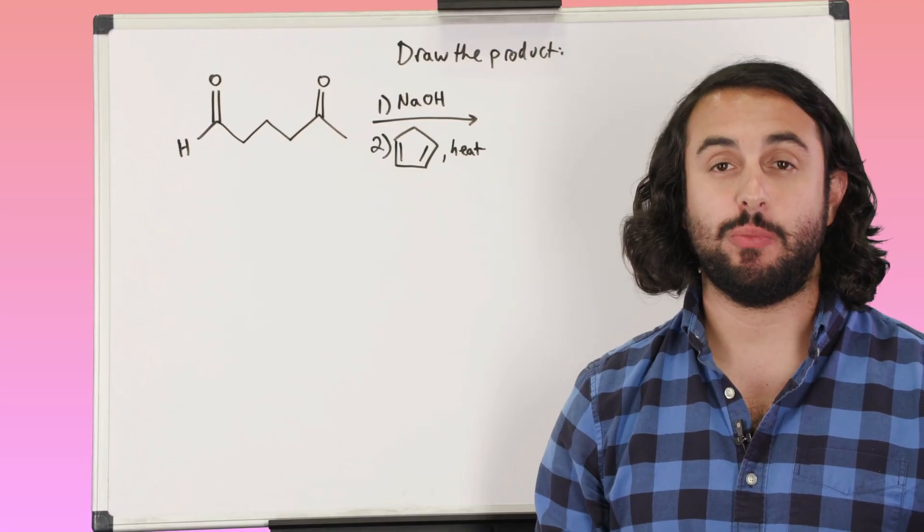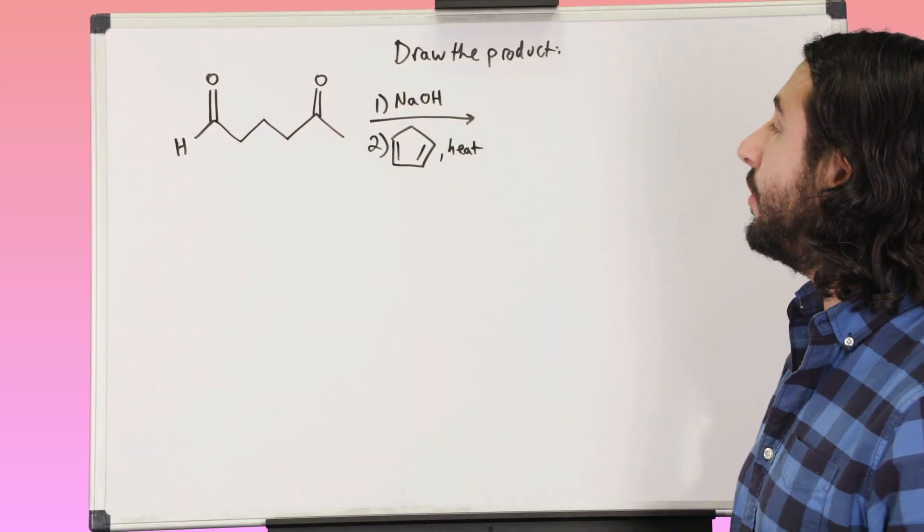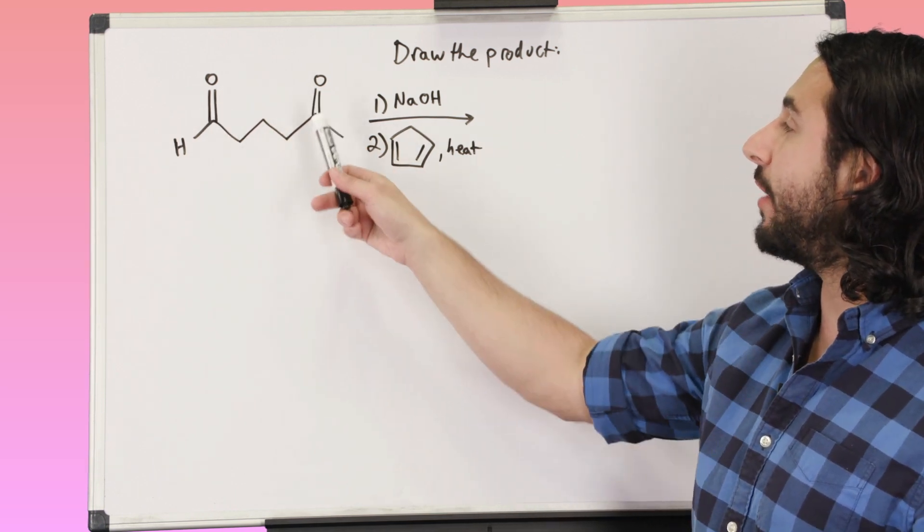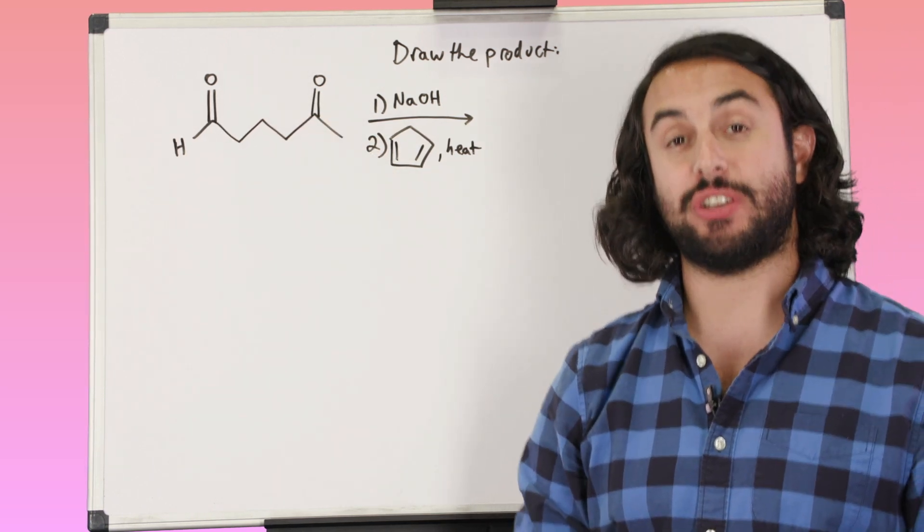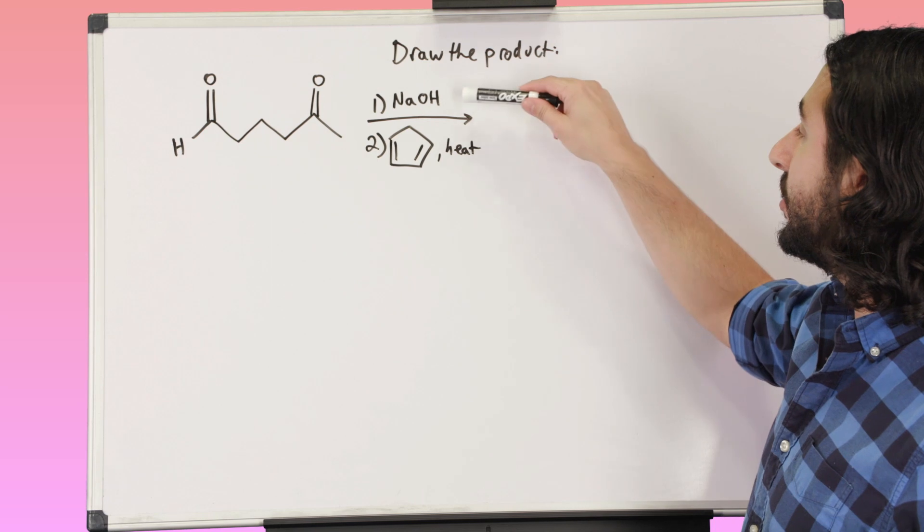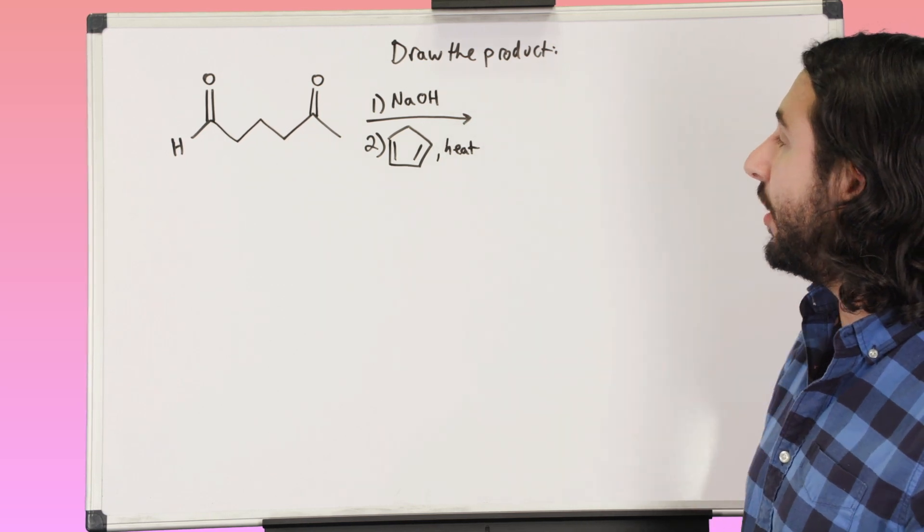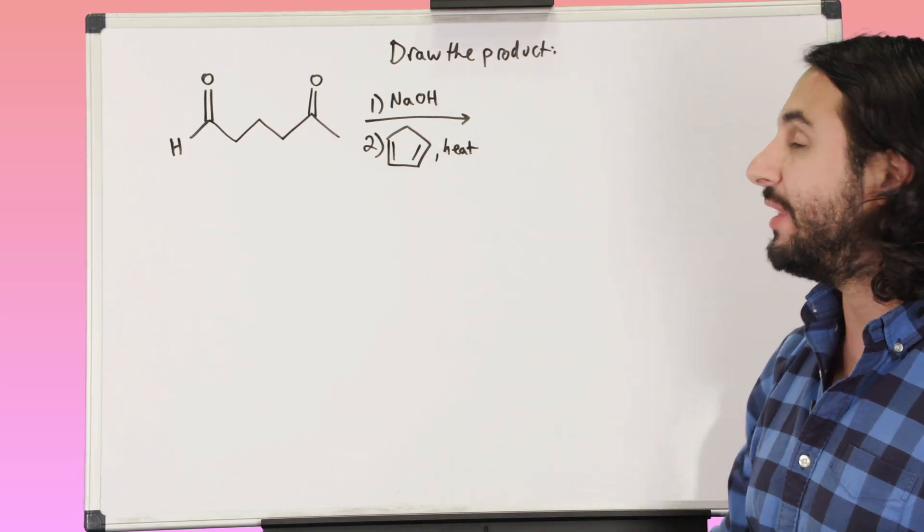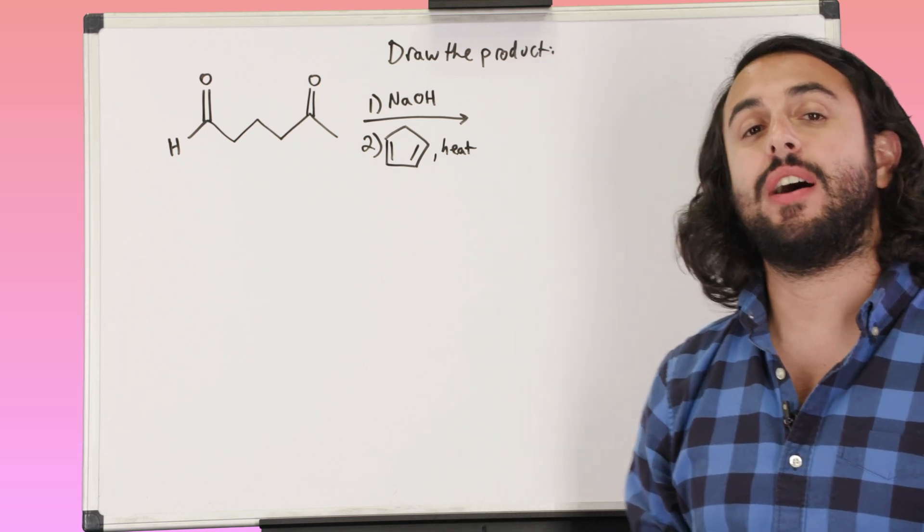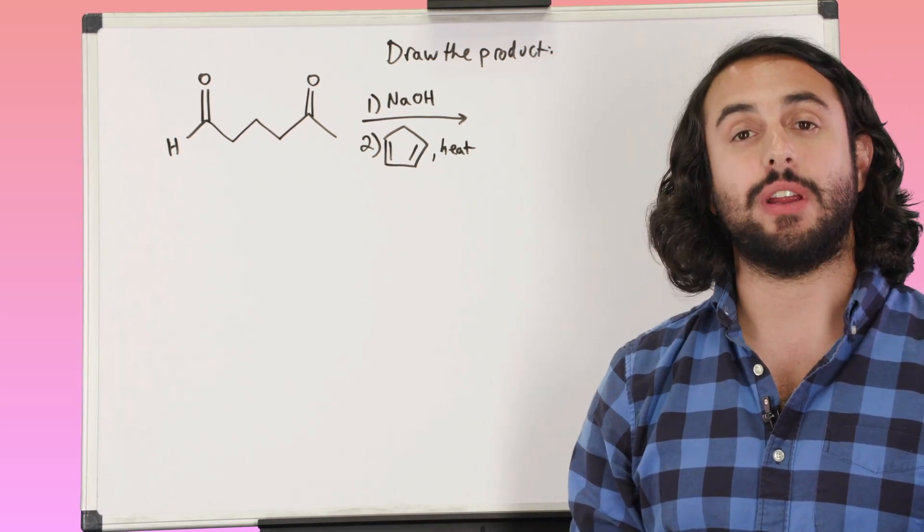Hey guys, so for this practice problem we have a little two-step sequence here. We've got this substrate with two different kinds of carbonyl functionality and we are going to run this through two reactions, one with strong base and then two with these conditions here, so try and think critically and see if you can get the right answer here.